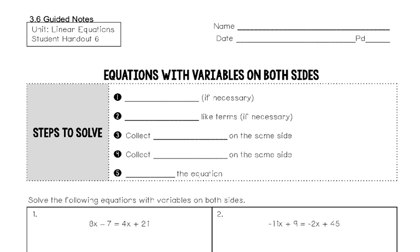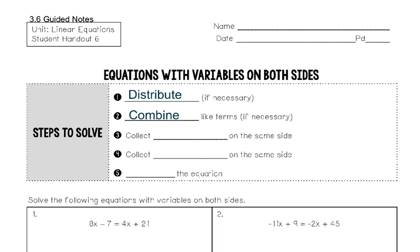Just like the last ones, there is a process to this. There are steps you have to solve in order — almost like following a recipe — that you can go step by step to solve your equation. Steps one and two are going to be to distribute and combine like terms if necessary. That just means do what you can do on one side of the equal sign before you do anything else.